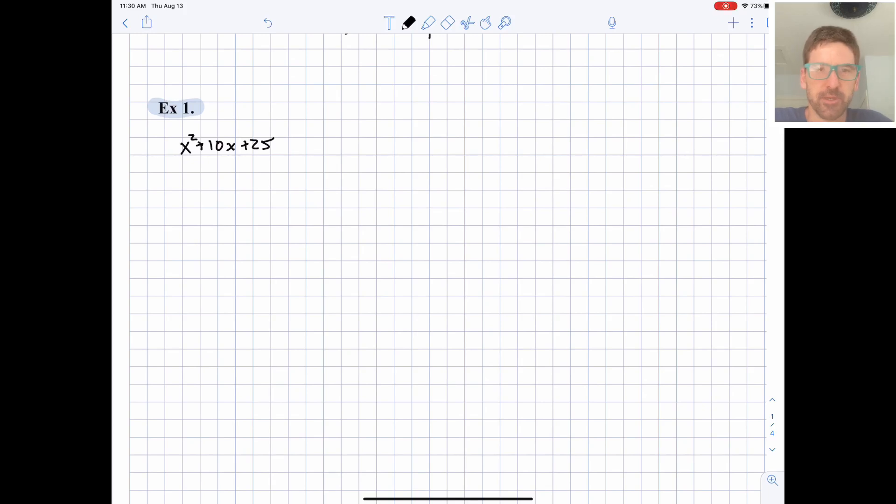x² + 10x + 25. Things to look for: is that a perfect square? It is—it's 5². And is that five doubled? It is. So this is going to go straight to (x + 5)² and we're done.